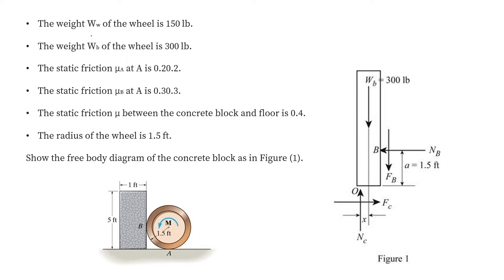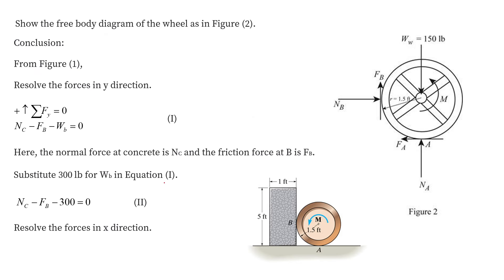The weight W of the disk (wheel) is given as 150 lb. The weight of the concrete block is given as 300 lb. The static friction coefficient at point A is 0.20, at point B is 0.30, and the static friction between the concrete and the floor is 0.40. The radius of the wheel is 1.5 feet.